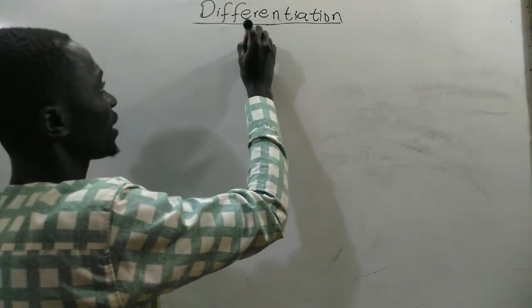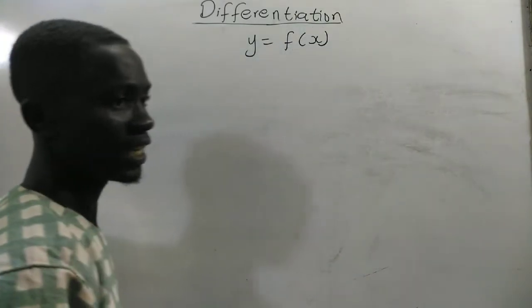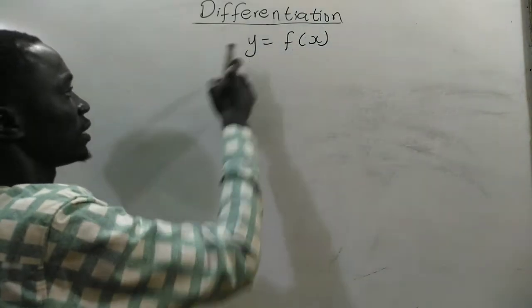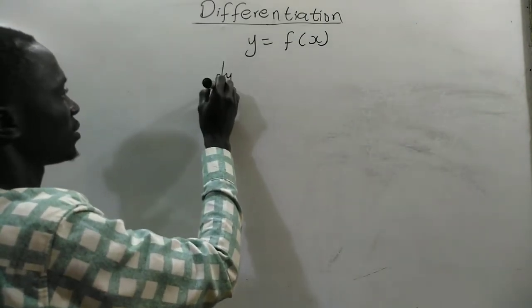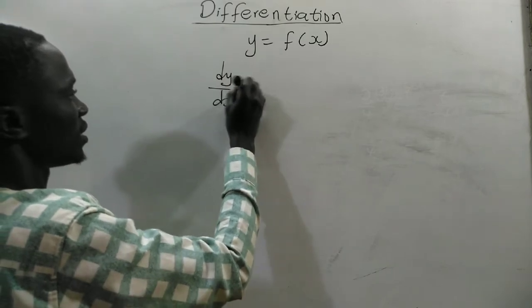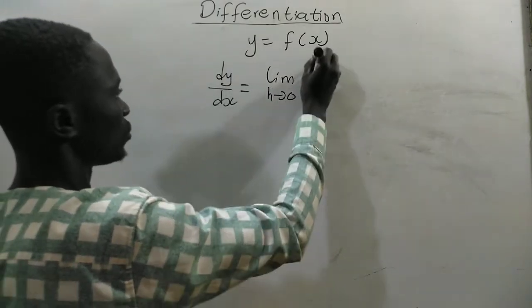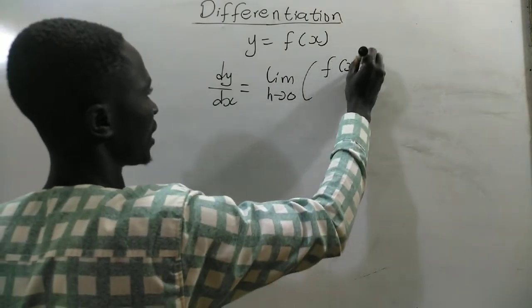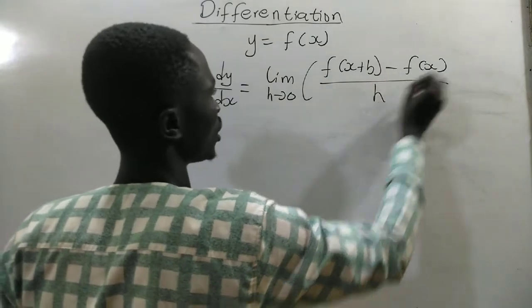Now, if we have y equal to f of x, then from first principle, the derivative of y with respect to x, that is dy/dx, is given by the limit as h approaches 0, f of x plus h minus f of x divided by h.